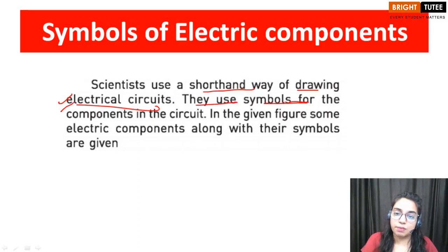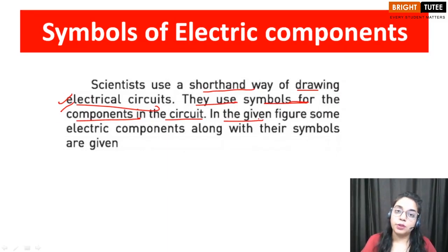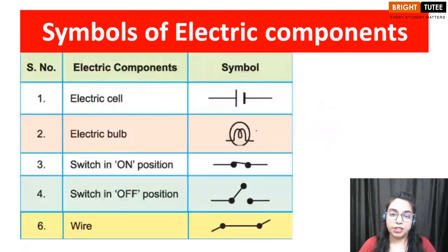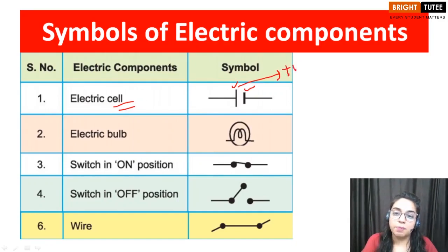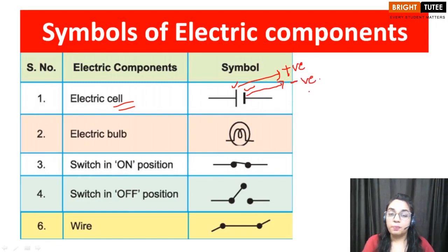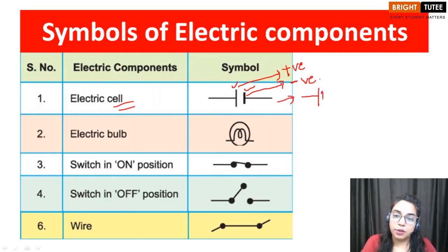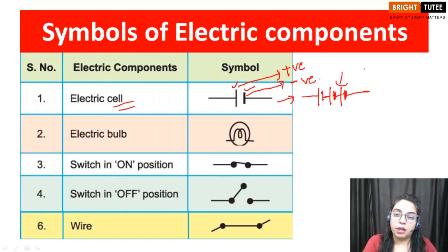Scientists use symbols for the components in the circuit. An electric cell is represented by two parallel lines — one is the longer line, which represents the positive terminal, and the shorter thicker line represents the negative terminal. If we have to make a battery of three cells, we make three such pairs of two parallel lines. Then we have the symbol for a battery comprising three cells.